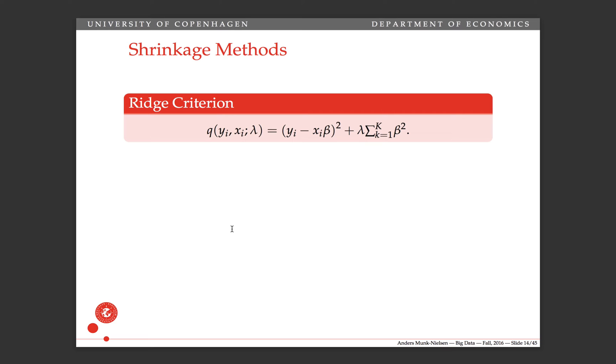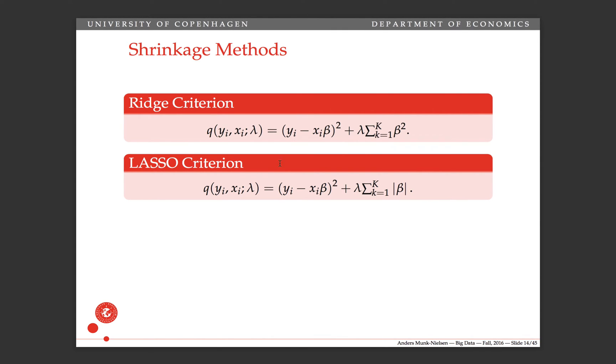Then we have these shrinkage methods or penalization methods where we have a penalized criterion. In the Ridge case, we have our usual OLS criterion, the squared residual, but then we also penalize the sum of squared coefficients by this number lambda. In the case of LASSO, we have the same except that it's the absolute value of the regressor. So both of these give us a penalty if we have too many large coefficients. They're going to prefer to find estimates where they get a good fit of y but balancing that the coefficients don't get too large.